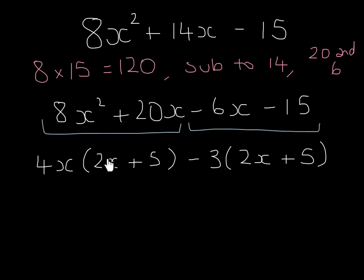You can see again I've got the same two brackets. So I can take that out as a common factor. Taking out 2x + 5, I'm left with (2x + 5)(4x - 3), and that one is now factorized.